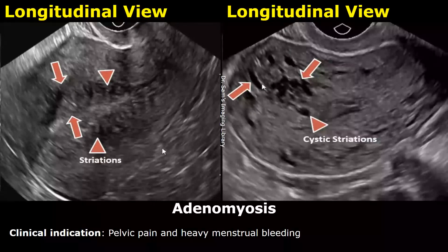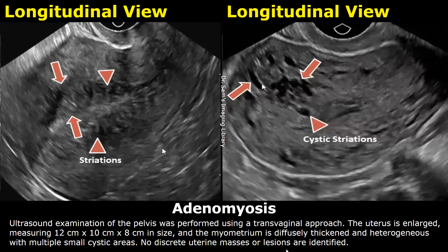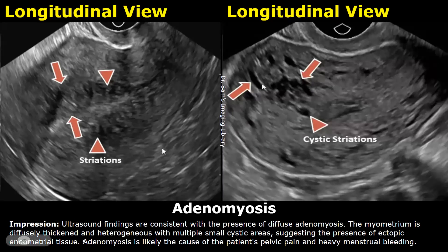Our next case is adenomyosis. The clinical indication in this example was pelvic pain and heavy menstrual bleeding. In the findings, write: 'The uterus is enlarged and the myometrium is diffusely thickened and heterogeneous with multiple small cystic areas.' In the impression, write: 'The myometrium is diffusely thickened and heterogeneous with multiple small cystic areas, suggesting the presence of ectopic endometrial tissue. Adenomyosis is likely the cause of the patient's pelvic pain and heavy menstrual bleeding.'